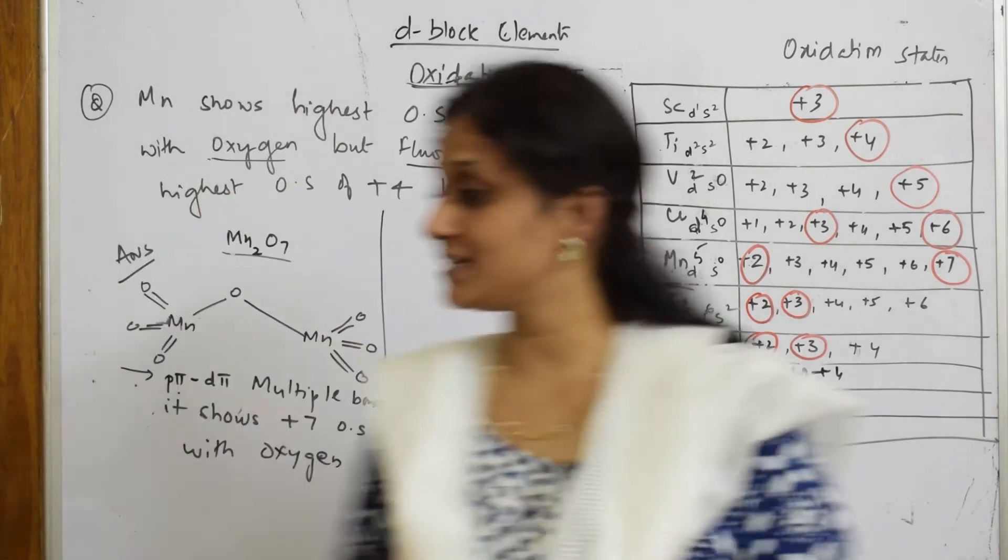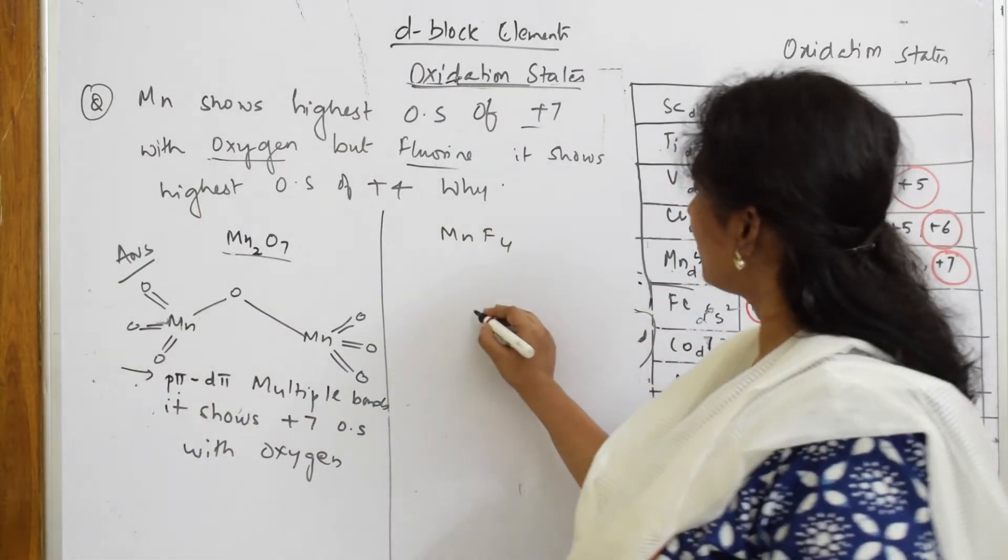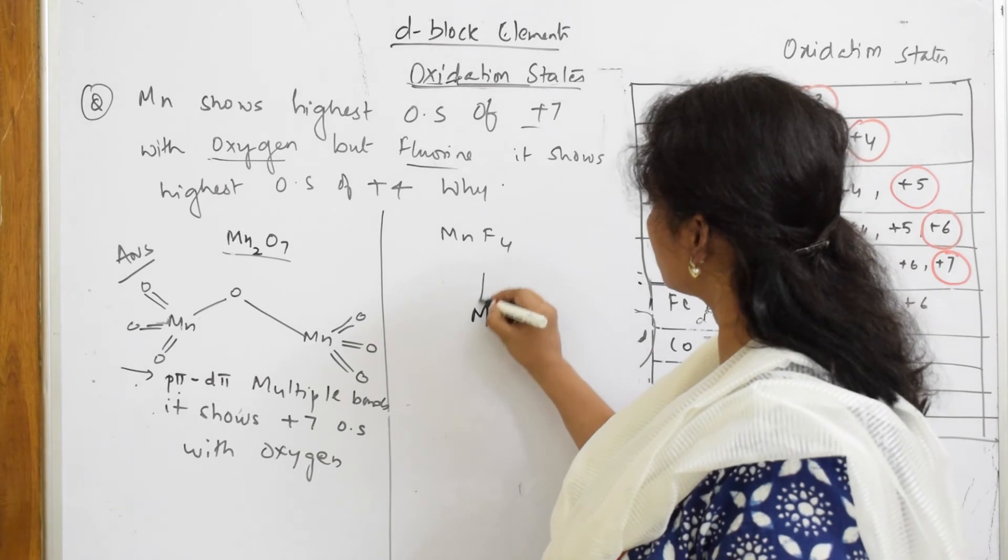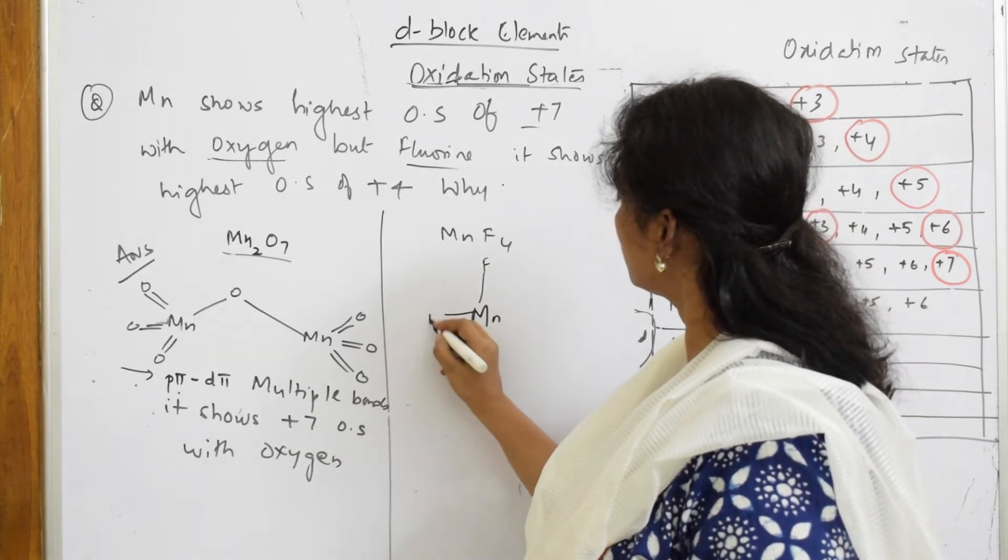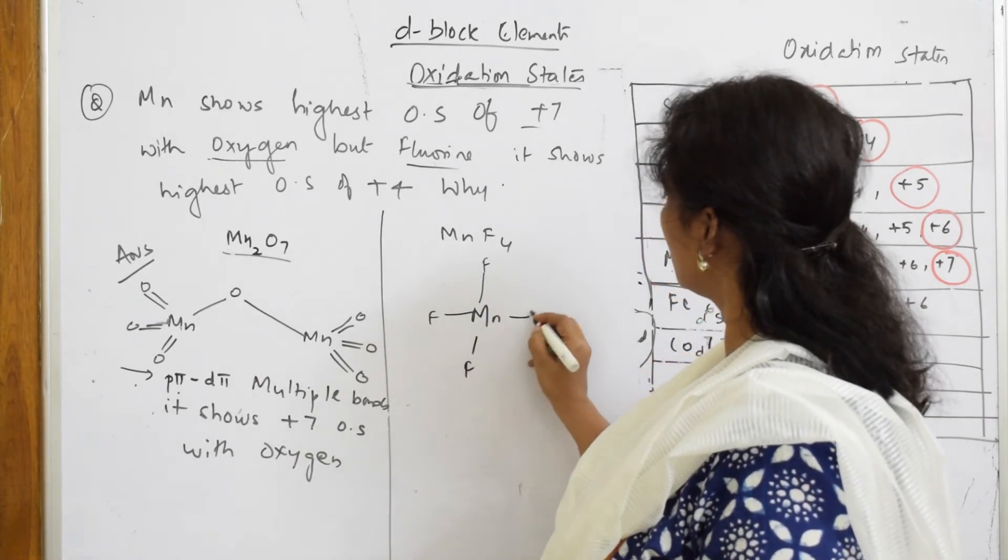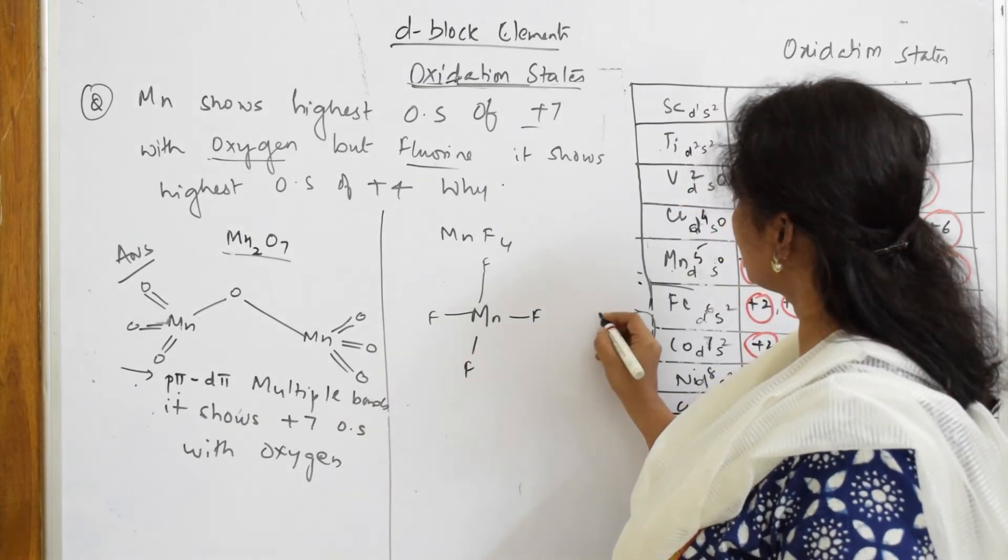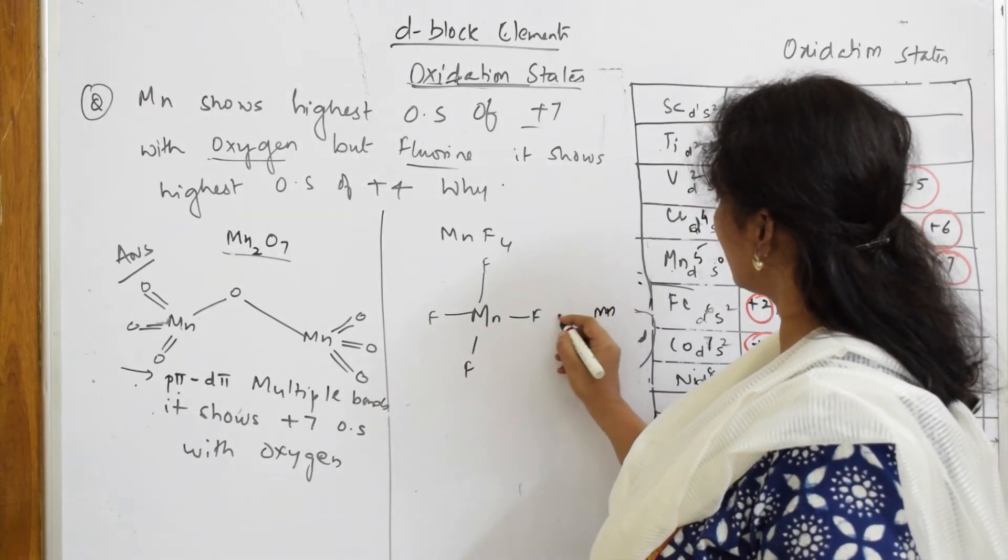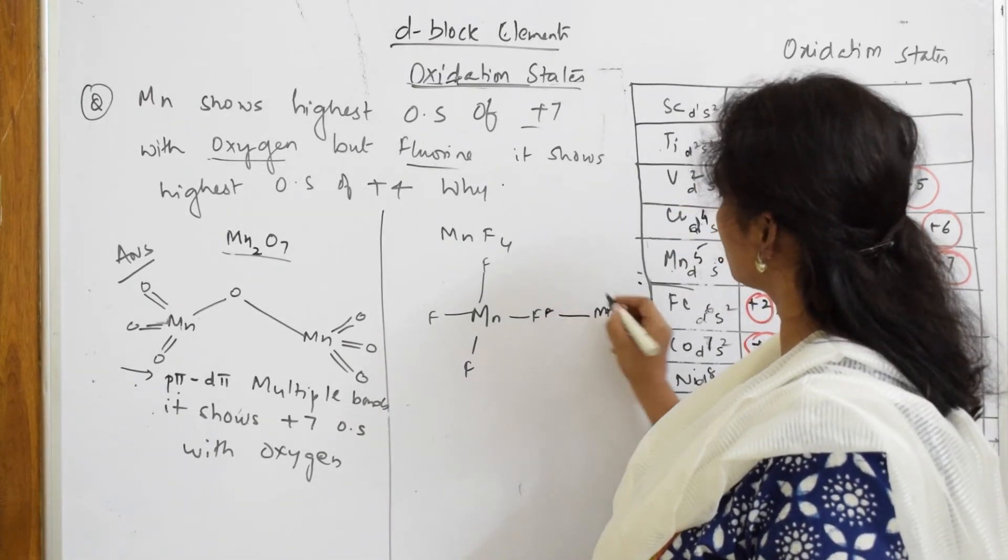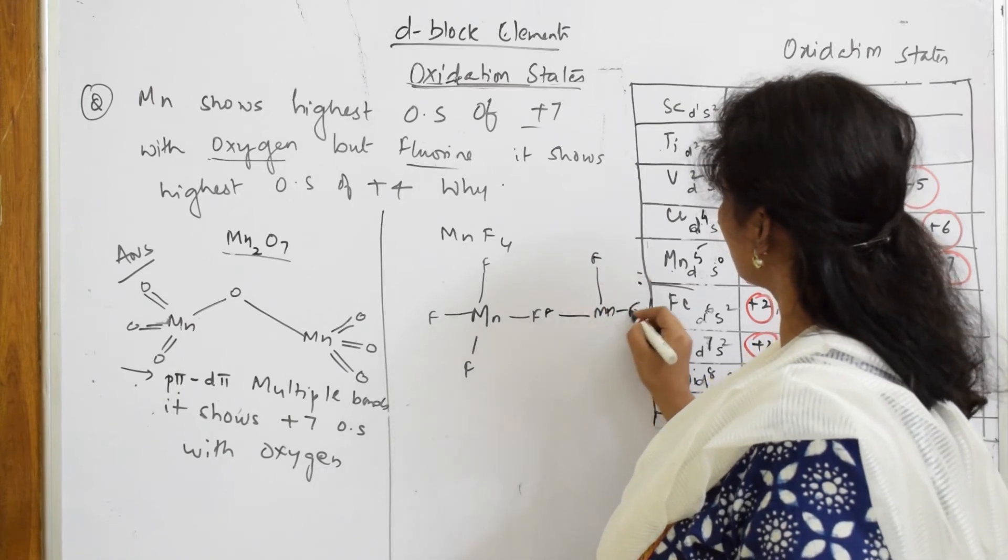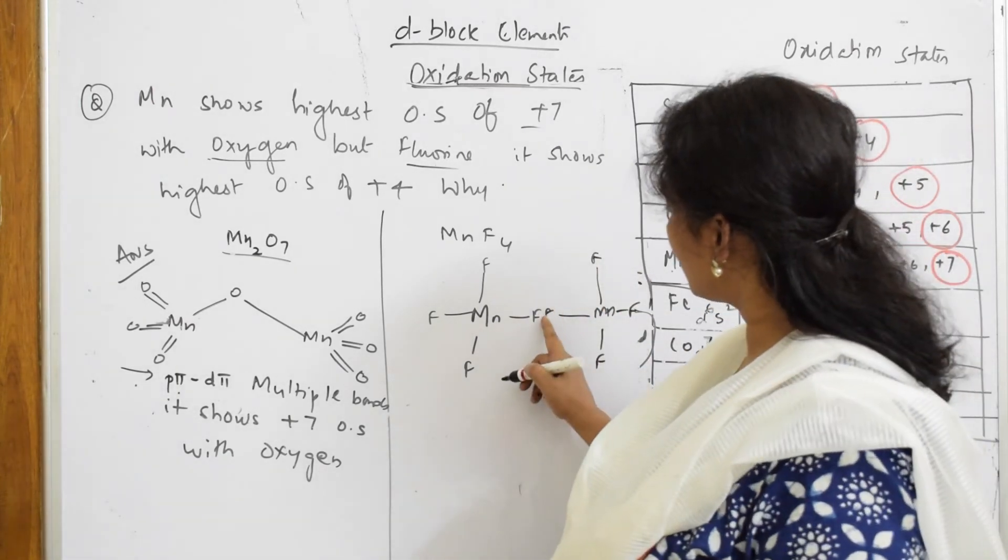Let us come back and see MnF4. In manganese fluoride, the structure is like this: four fluorine atoms, one more, one more, and one more manganese here in the center, and it is like this - both club together with fluorine atoms.